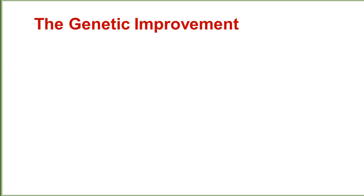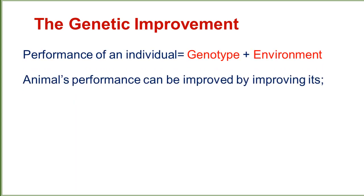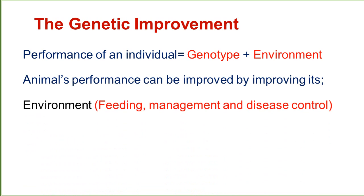Let's start. First of all, let's discuss how genetic improvement occurs in an animal. There are two factors involved in genetic improvement: first is the genotype and the next is the environment. Both these factors — genotype and environment — play an important role in the genetic improvement of the animal.